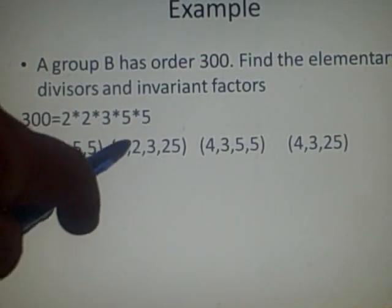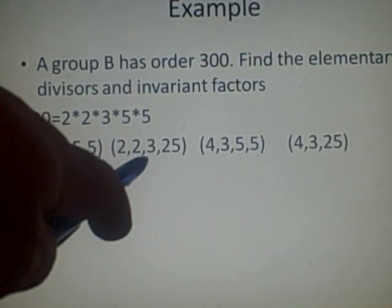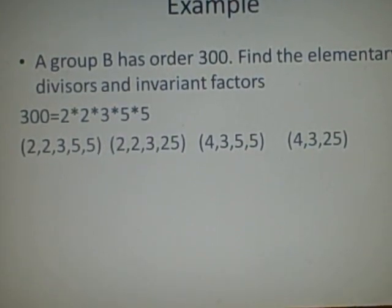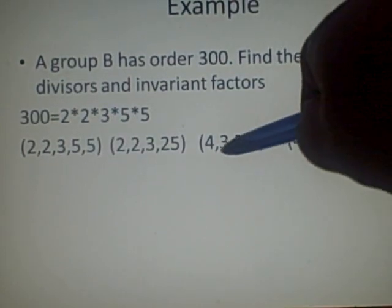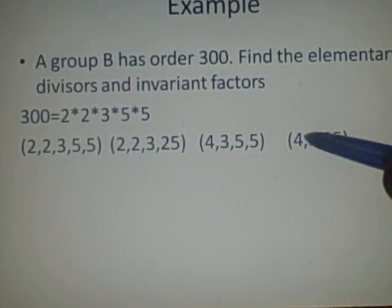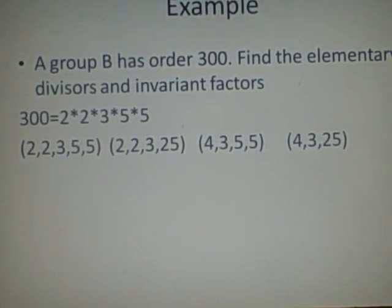This one here, we've got 2, 3, 25. They're all co-prime. So we've got 2 and 150. Here, we've got 4, 3, 5. They're all co-prime, which if we multiply gives us 60 and 5. And here, all of these we multiply together to just give you 300.